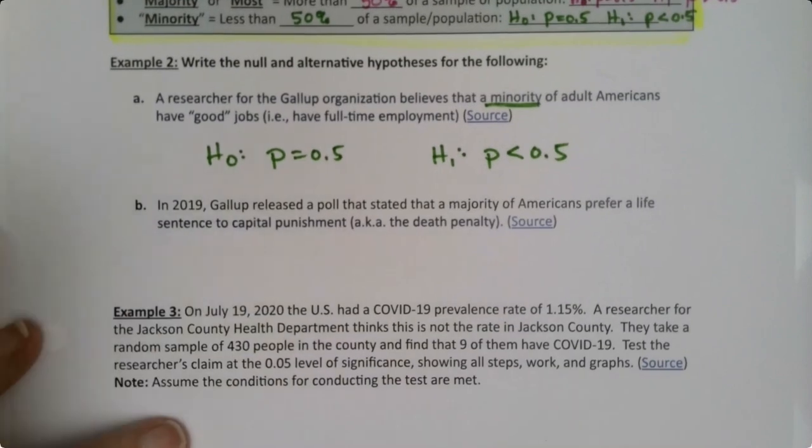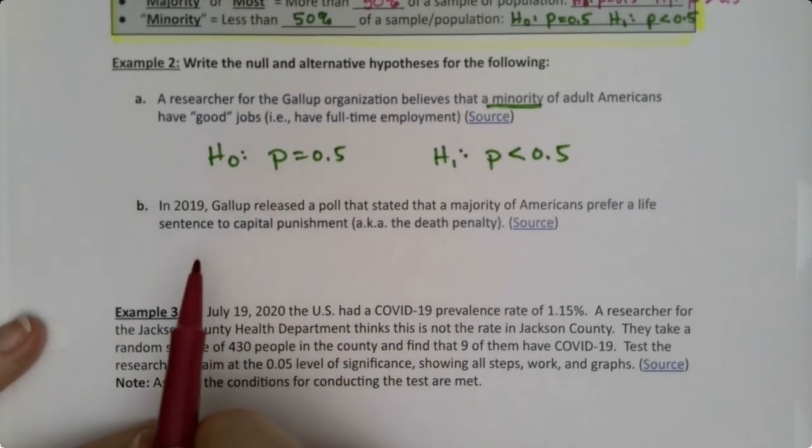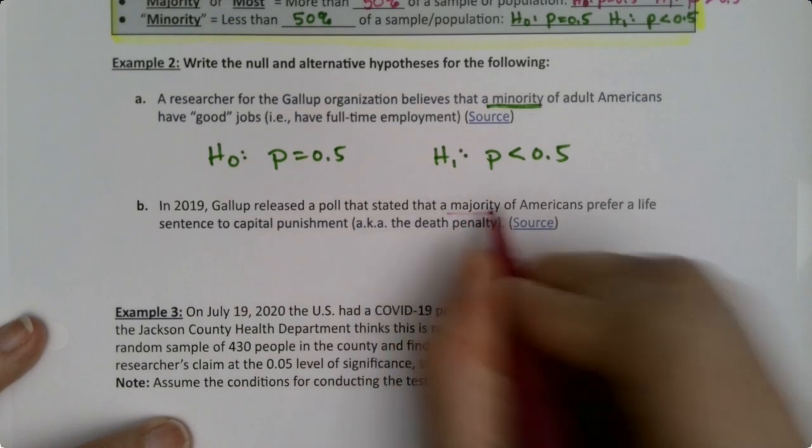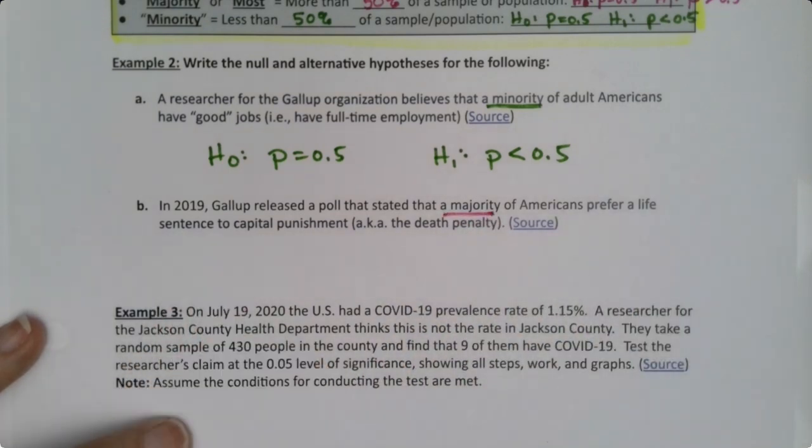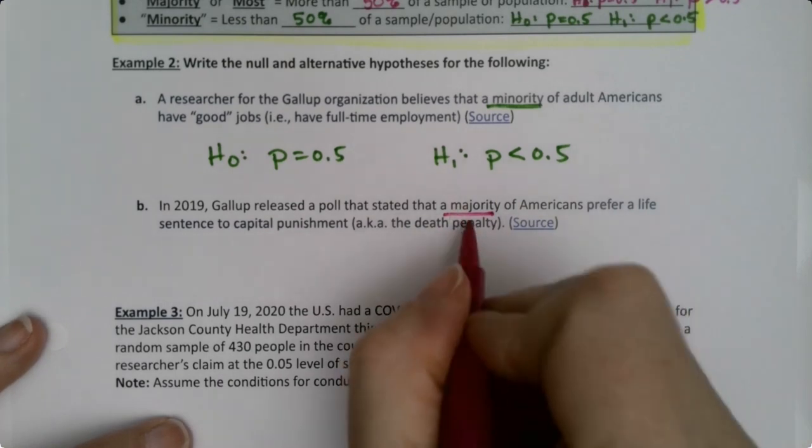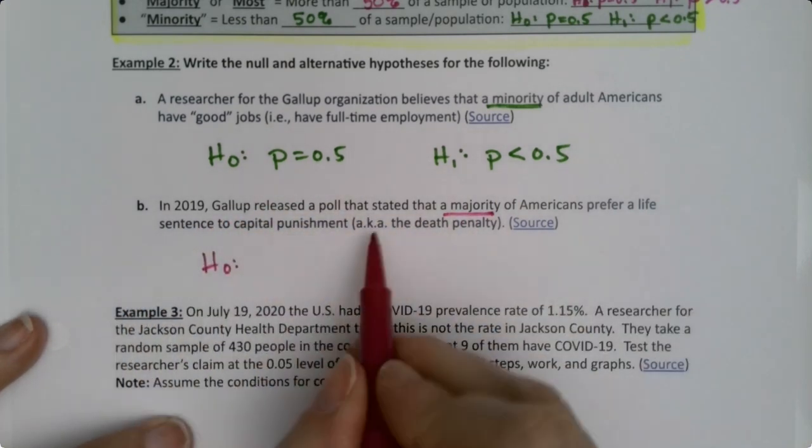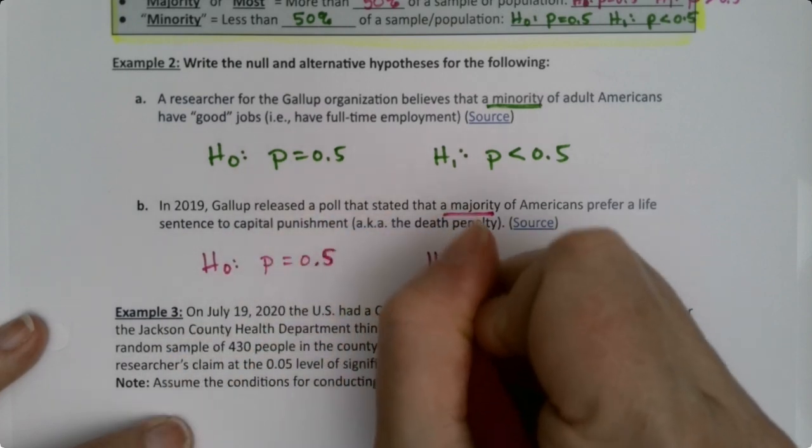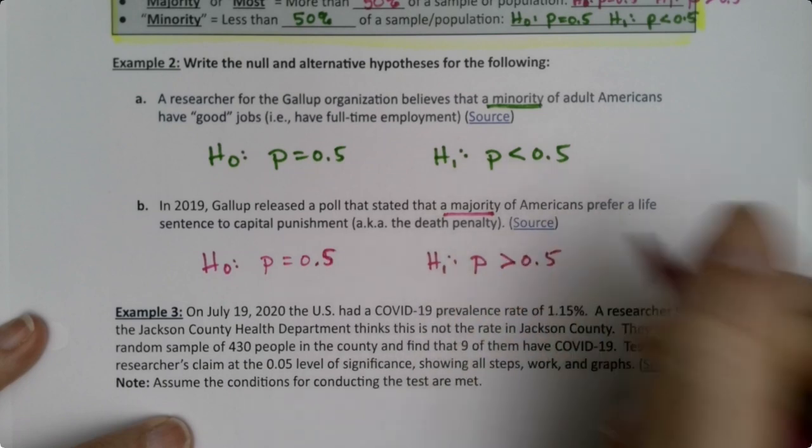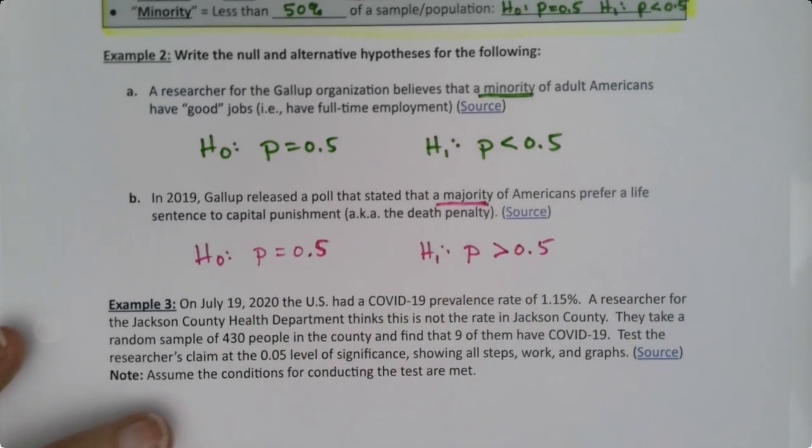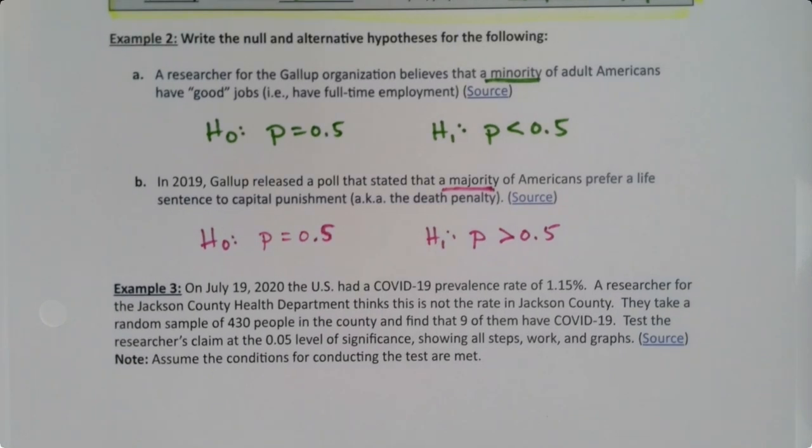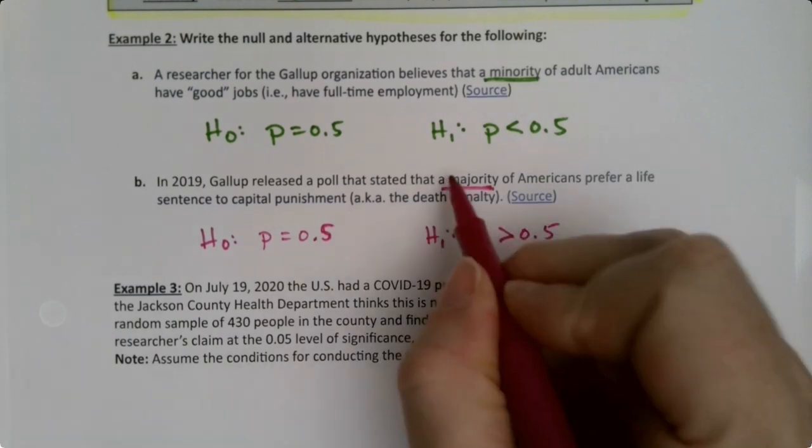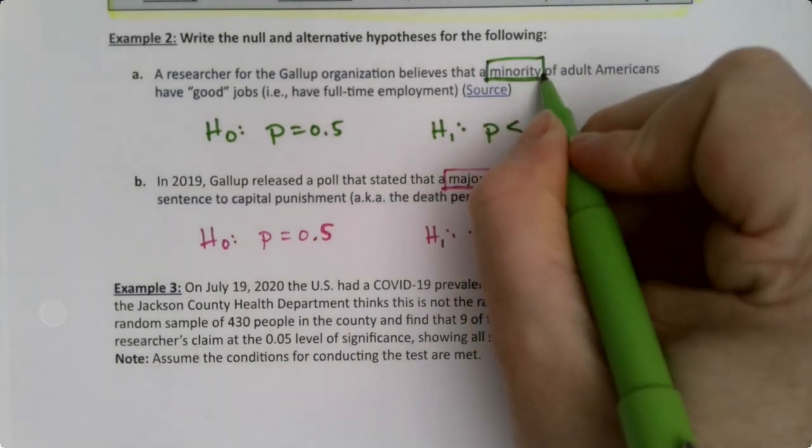By the same token, in 2019 Gallup released a poll that said a majority of Americans prefer a life sentence to capital punishment, aka the death penalty. Majority means once I see that word, they don't have to give me any more. I know it's a survey, so I know it's 0.5, and I know the alternative is greater than 0.5. That word gives me all of those pieces. Sneaky, huh? Because it's just one word, and as a student you're hunting around the problem for extra numbers and percentages, but there aren't any more because this one word is giving you all of that.